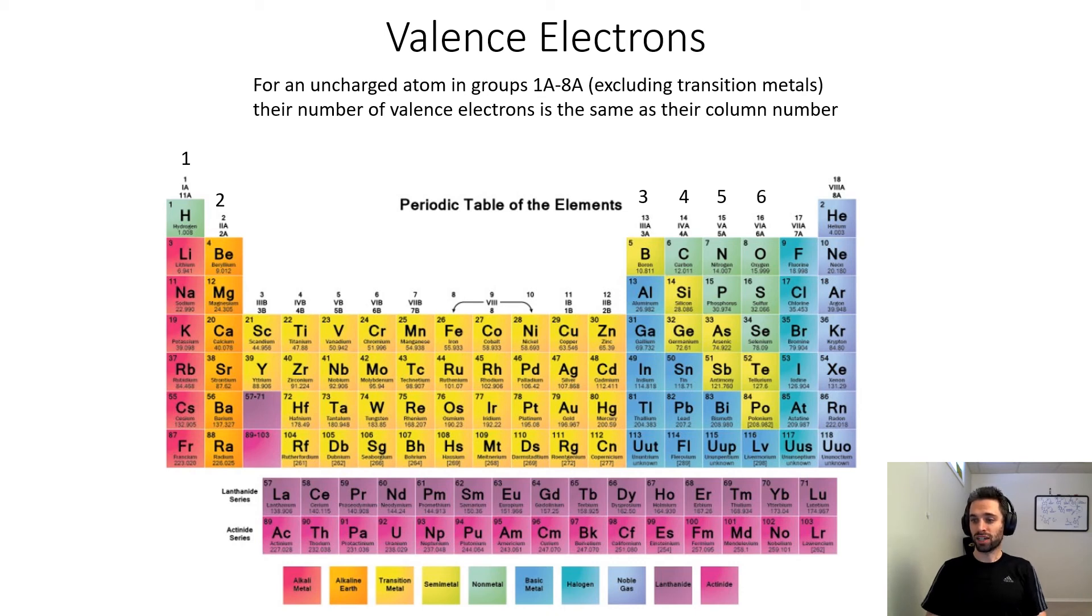Oxygen, sulfur, selenium, tellurium. These all have six valence electrons. Selenium, for example, would have six valence electrons and 28 core electrons.